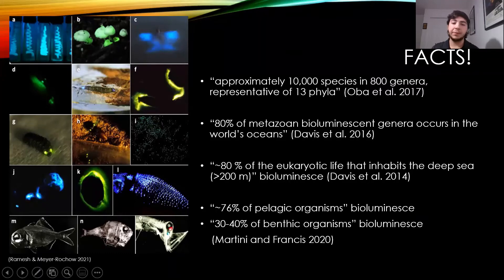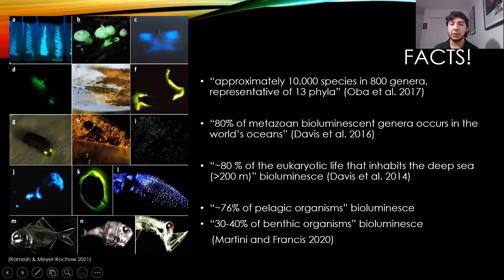Some facts about bioluminescence: approximately 10,000 species in 800 genera represented across 13 phyla bioluminesce — a huge amount across the tree of life. In addition, 80% of metazoan, or animal, bioluminescent genera occurs in the world's oceans. On top of that, roughly 80% of the eukaryotic life inhabiting the deep sea, which is below 200 meters, bioluminesces. About 76% live in pelagic ecosystems, meaning open ocean, and 30 to 40% in benthic ecosystems at the bottom of the sea. These are rough estimates since not all species have been discovered.